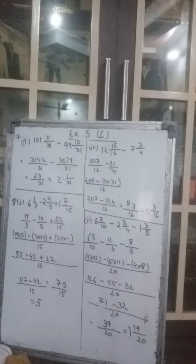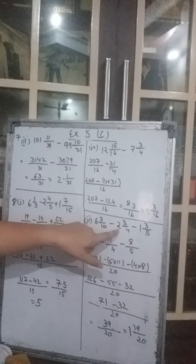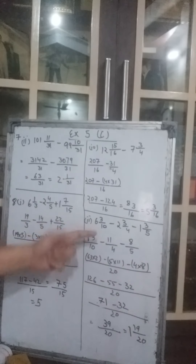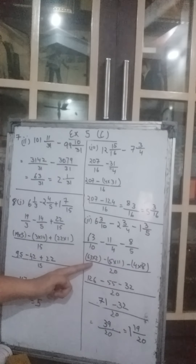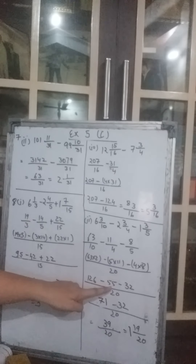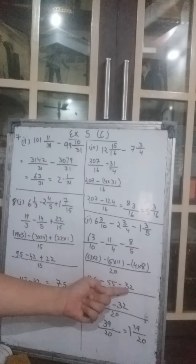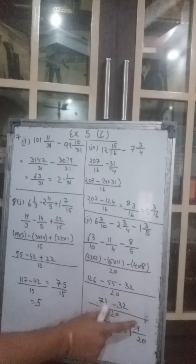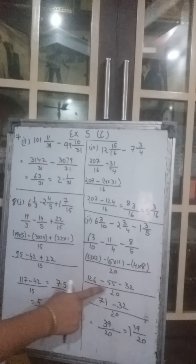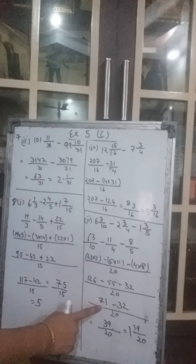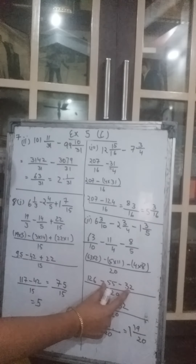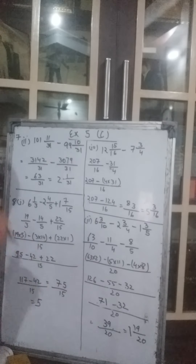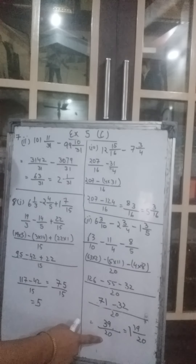Now the second part: 6 whole 3 upon 10 minus 2 whole 3 upon 4 minus 1 whole 3 upon 5. We have converted them into improper fractions. LCM is 20. We get 126 minus 55 minus 32. Both are with the minus sign. You can do 126 minus 55 to get 71 and then minus 32, or add the two minus terms first and subtract from 126 — both ways are correct. The answer is 39 upon 20, which converts to 1 whole 19 upon 20.